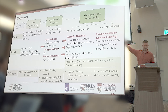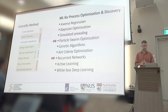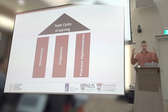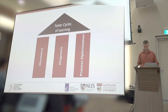Beyond diagnosis, we ultimately want to optimize the process and discover. For process optimization, we'll discuss particle swarm optimization and recurrent networks in today's workshop. The overarching motivation is faster cycles of learning, achieved by applying ML and high-throughput experimentation to discovery, diagnosis, and process optimization. Without further ado, I'm going to hand over the microphone to our first speaker, Chen Xiao, and let him take it from there.